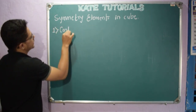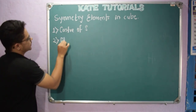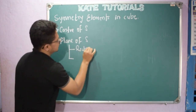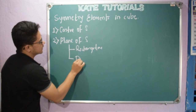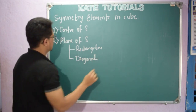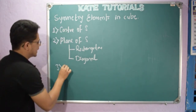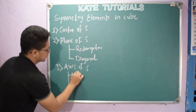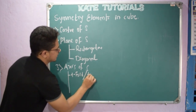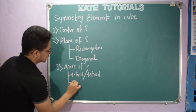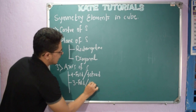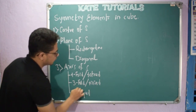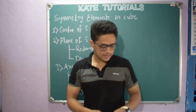The first one is center of symmetry. Next comes plane of symmetry, which is divided into two: one is rectangular plane of symmetry and the second one is diagonal plane of symmetry. The third symmetry element is axis of symmetry, divided into three categories: fourfold or tetrade axis of symmetry, threefold or triade axis of symmetry, and twofold or diade axis of symmetry. Let us discuss them one by one.